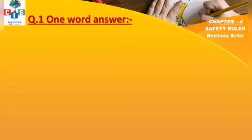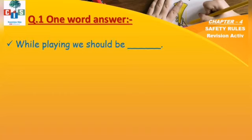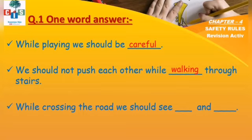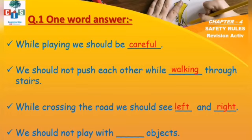The first question is one-word answers — we have to write only one word. First: while playing, we should be careful. Then, we should not push each other while walking through the stairs. While crossing the road, we should see left and right. Fourth: we should not play with sharp objects.